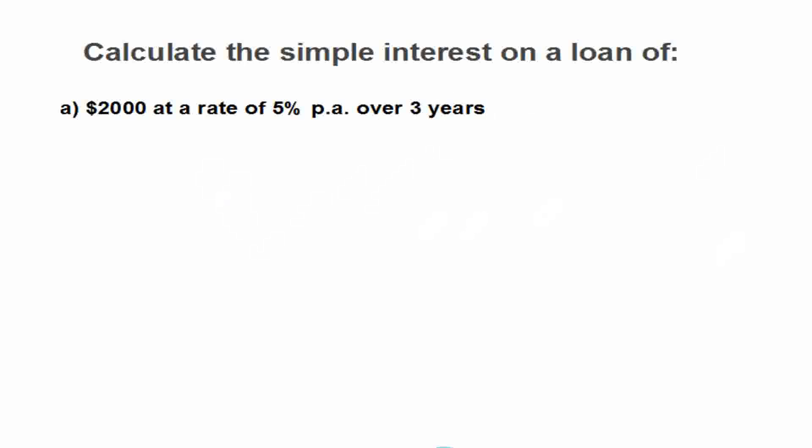First, you have to write the formula of simple interest. Simple interest is given by the formula I = PTR/100, where P stands for the principal.